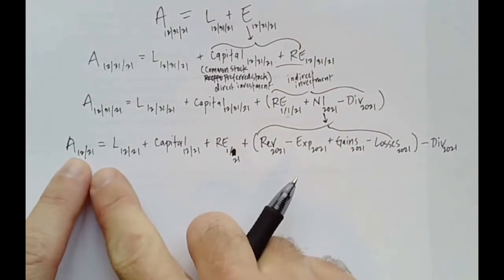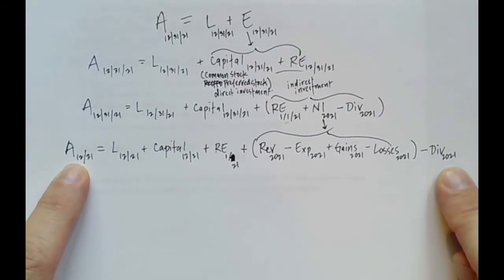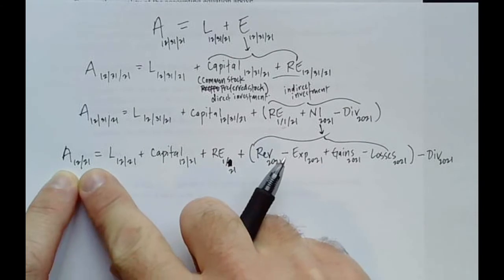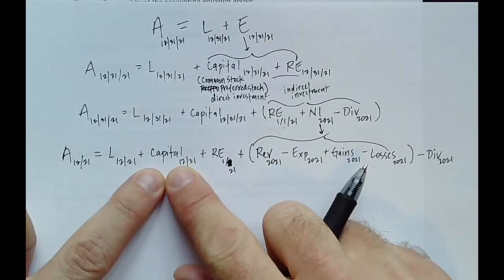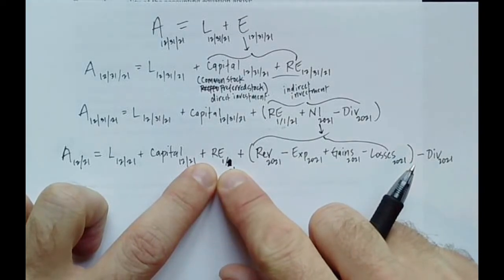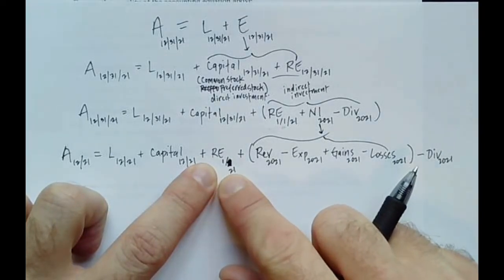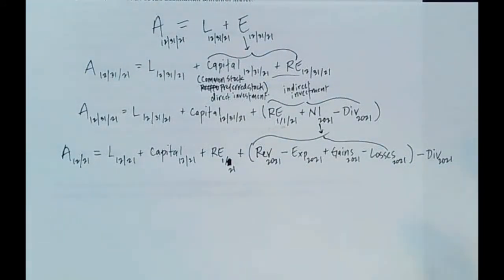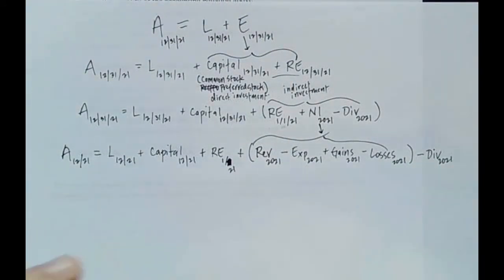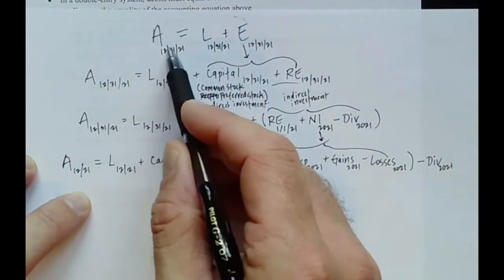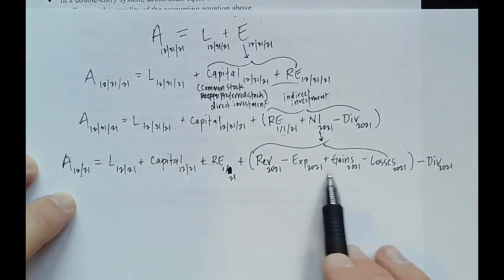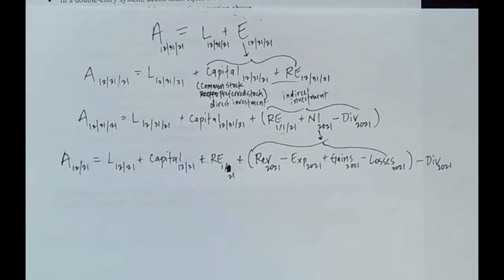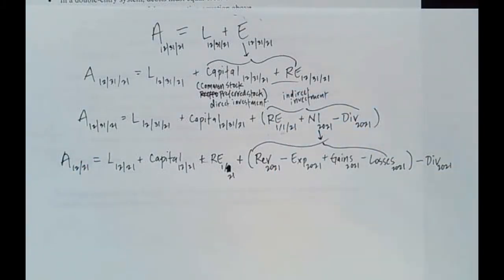One thing you can notice is that these are all of the elements defined in the statements of financial accounting concepts. We defined assets, we defined liabilities; capital represents investments; retained earnings is comprehensive income that gets closed into equity. All of this is comprehensive income, and dividends are a distribution. We've laid out how one item from the balance sheet results in all these items from other financial statements.